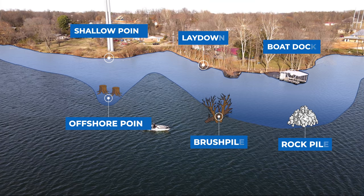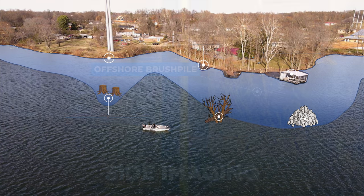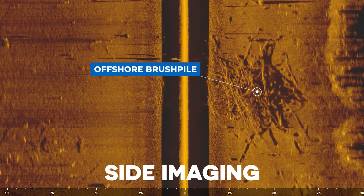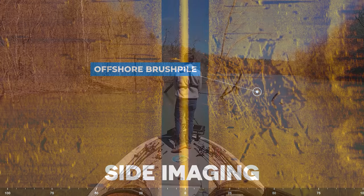To bring this concept full circle, let's go back to that aerial view of that bank with the shallow cover and the offshore cover. Again, in this aerial view you can easily see the visible targets that are on the bank. However, you won't be able to see those underwater targets unless you use side imaging, which is basically giving you a bird's-eye view of what's under the water.